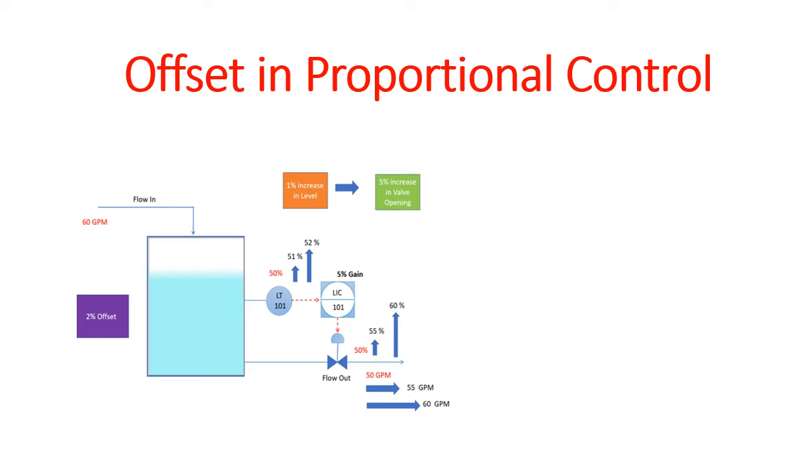We will take the same example and show you how the proportional control cannot keep offset at zero. If you use proportional control, certain offsets are created. In this video, we will discuss how offsets are created in proportional control and how we can minimize it.